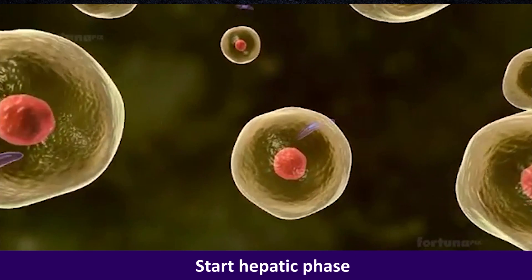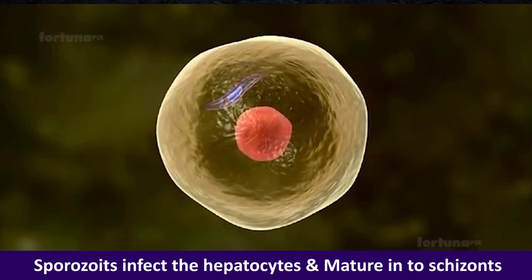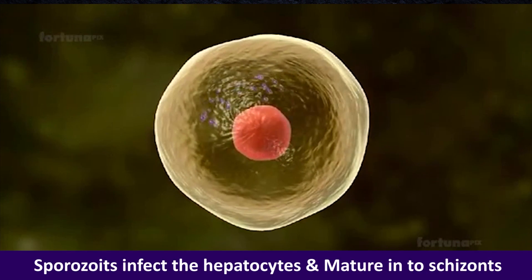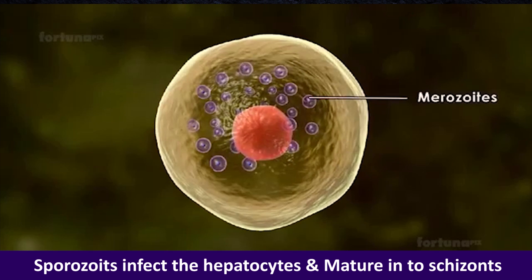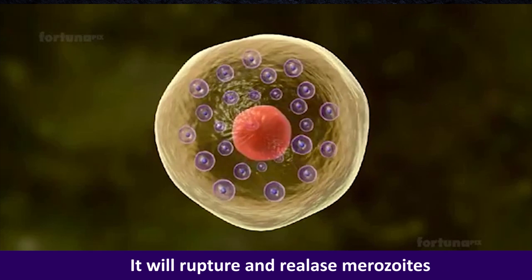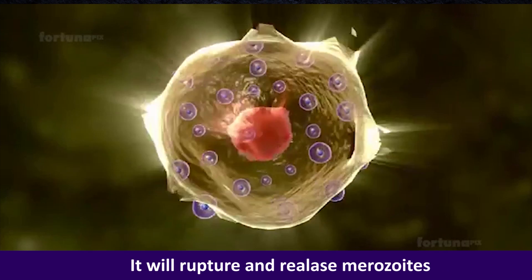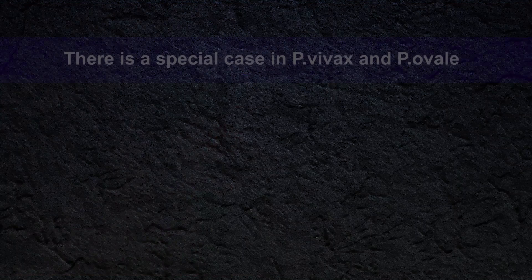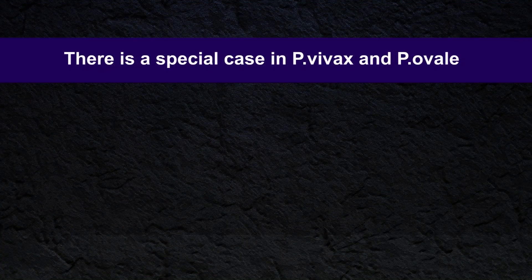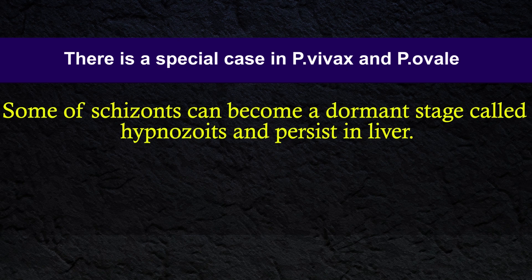Spirocytes first migrate to the liver and start the hepatic phase of psychogony. Spirocytes infect the hepatocyte and mature into psychogony. Spirocytes then fracture and release myrocytes. There is a special case in plasmodium virax and plasmodium ovale: some of the psychogony can become a dormant stage called hypnocytes.